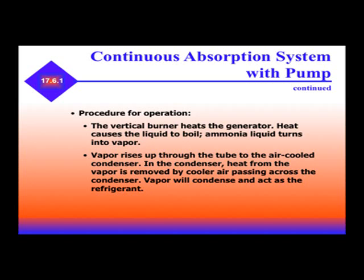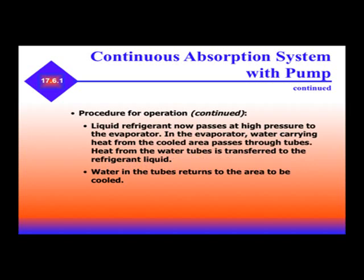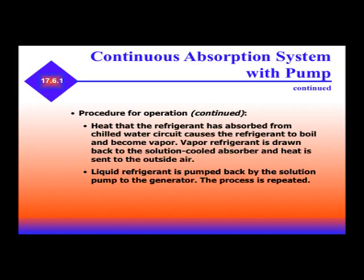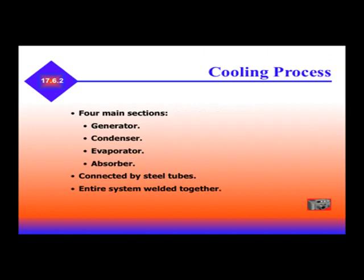With a pump, the sequence of operation is slightly different. The vertical burner heats the generator. Heat causes the liquid to boil and ammonia liquid turns into vapor. Vapor rises through the tube to the air-cooled condenser, where heat from the vapor is removed by cooler air passing across the condenser and the vapor condenses as a refrigerant. Liquid refrigerant passes at high pressure to the evaporator, where water carrying heat from the cooled area passes through tubes and transfers heat to the refrigerant liquid. The refrigerant boils and becomes vapor, is drawn back to the solution in the cooled absorber, and heat is sent to the outside air. Liquid refrigerant is pumped back by the solution pump to the generator and the process is repeated.